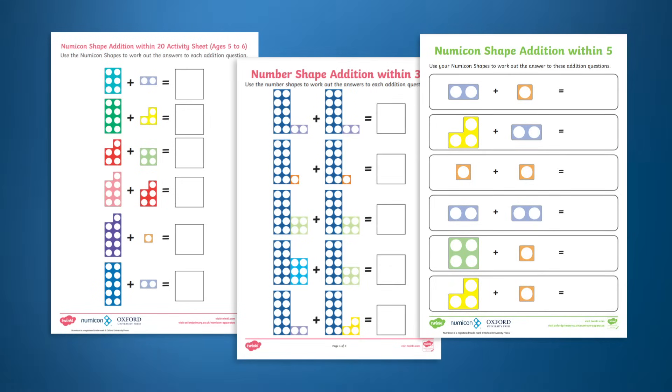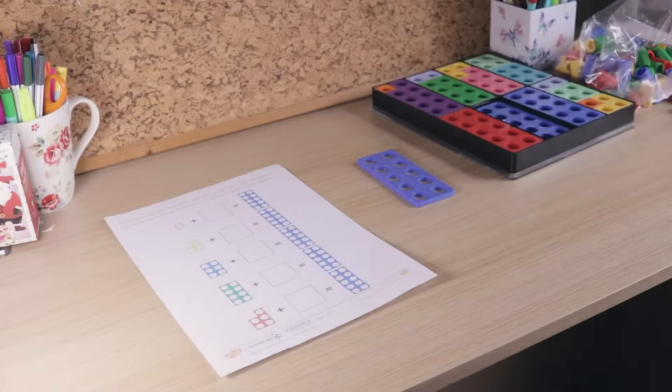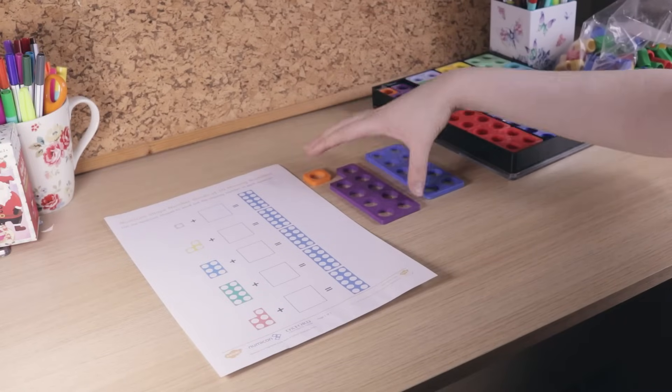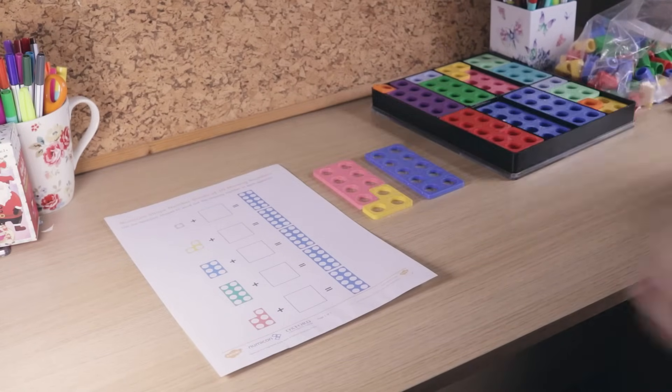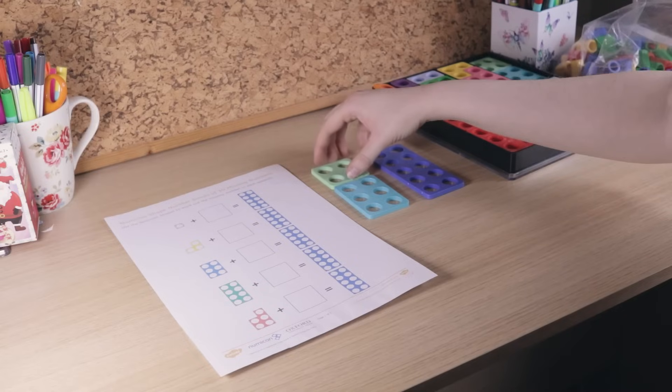There are lots of activities to support addition to ten and beyond. Let's take a look at this number bonds to ten activity. In this activity, children can combine the Numicon shapes to figure out which is the missing number.